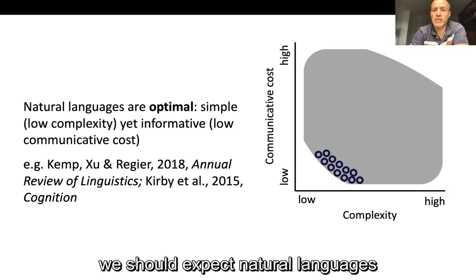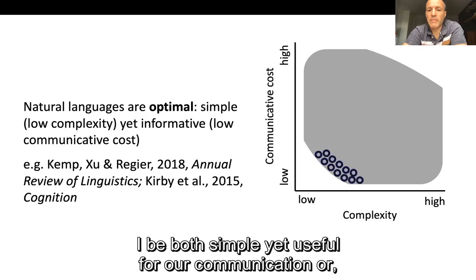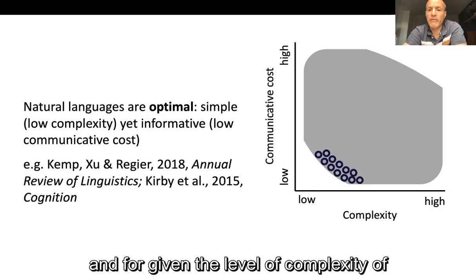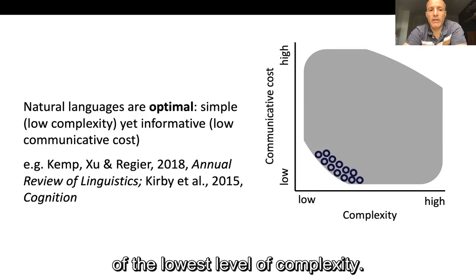What this conjecture says is that we should expect natural languages to fall in a region where they are both simple yet useful for communication — for a given level of complexity having the lowest communicative cost, and for a given communicative cost having the lowest level of complexity. That's quite abstract.